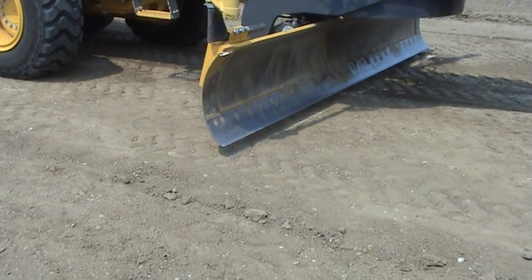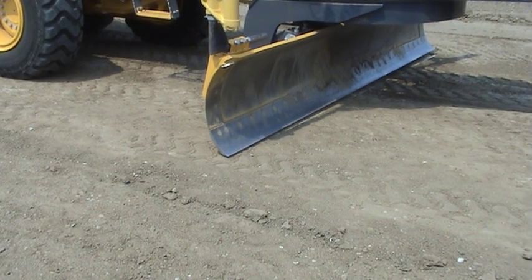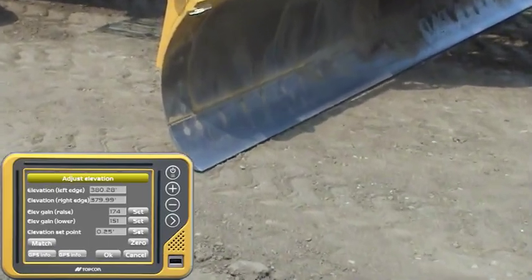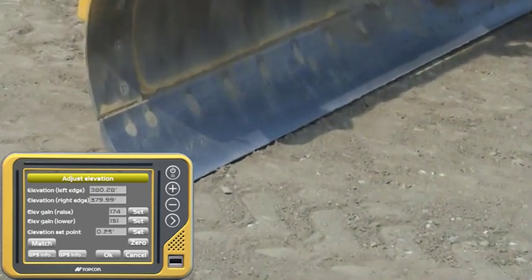In this final example, the lower gain has been set to 151. The blade quickly reacts and holds grade. This is the ideal setting for a gain value.